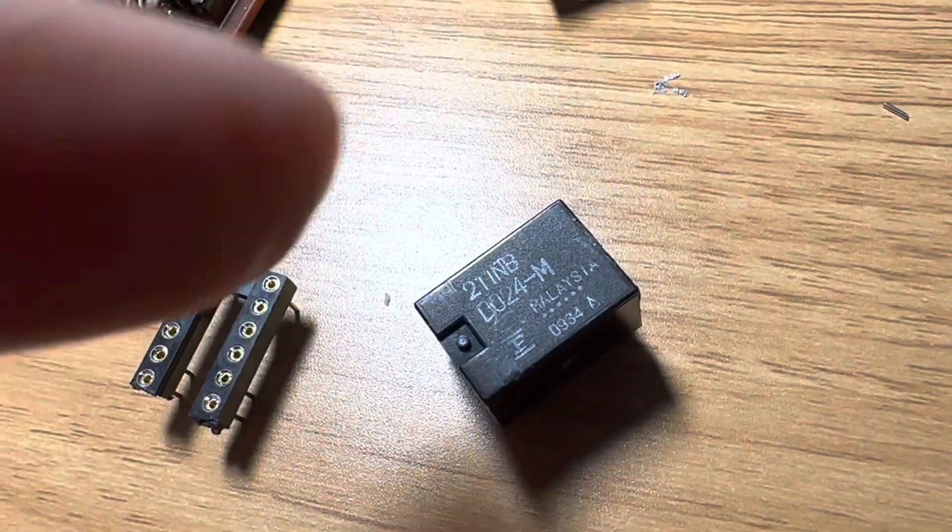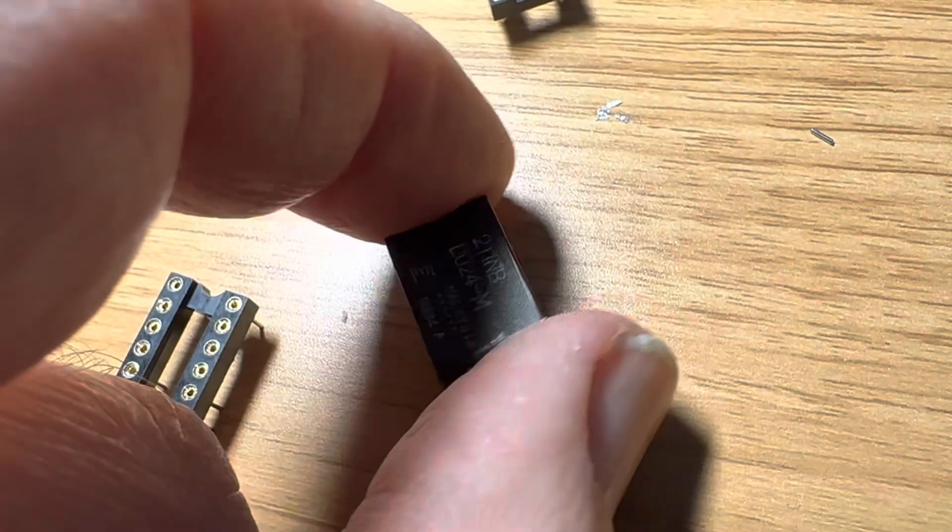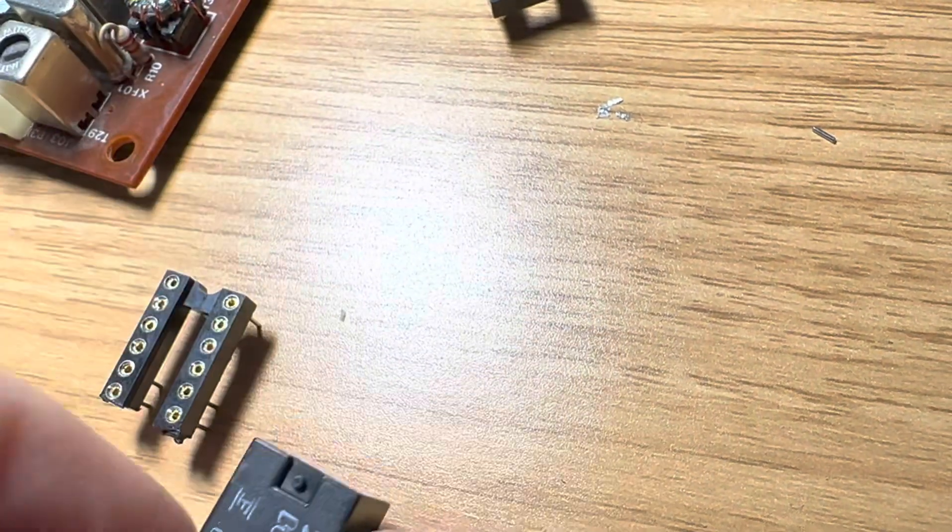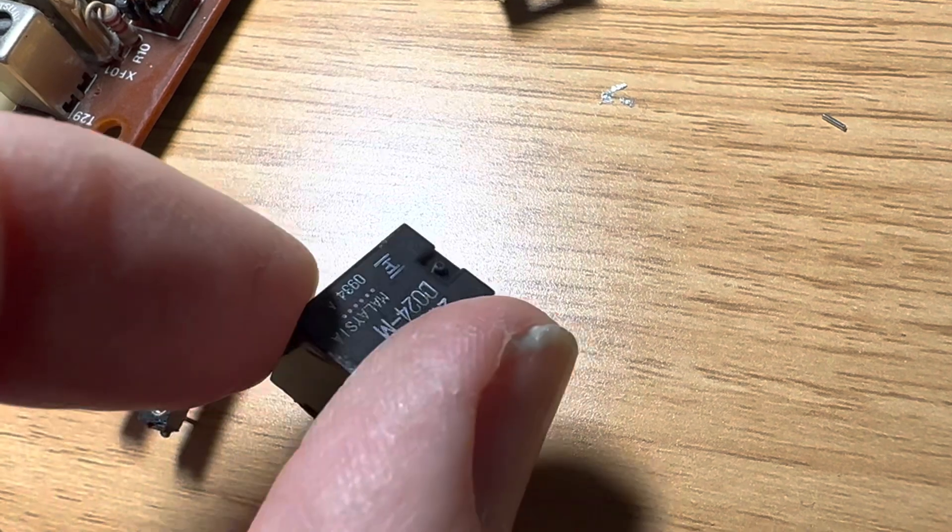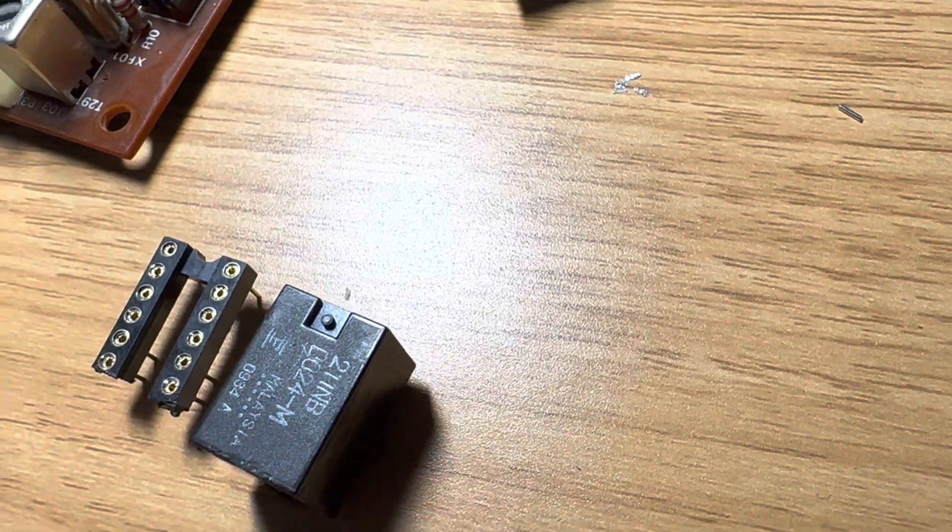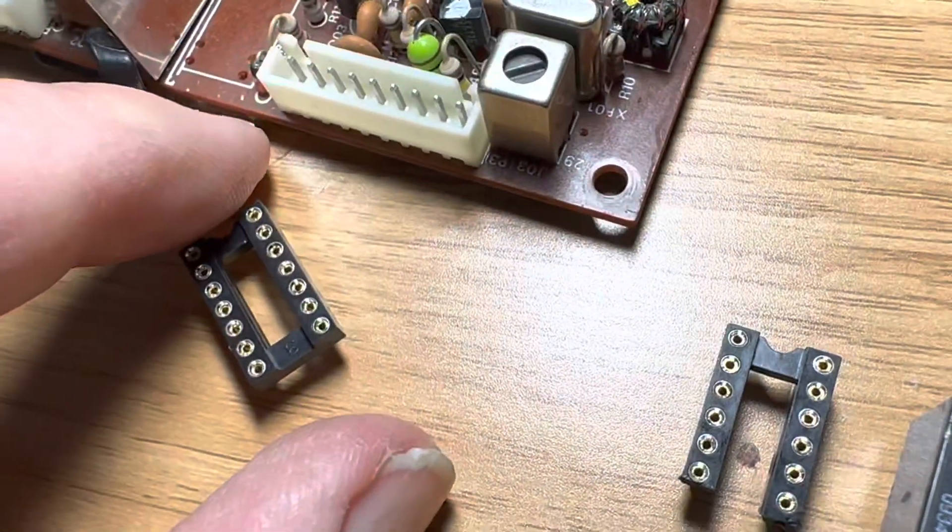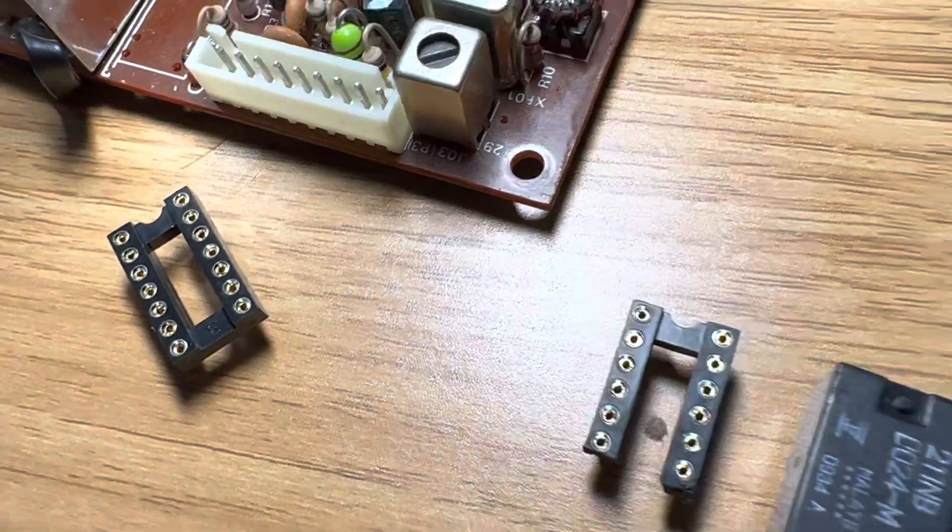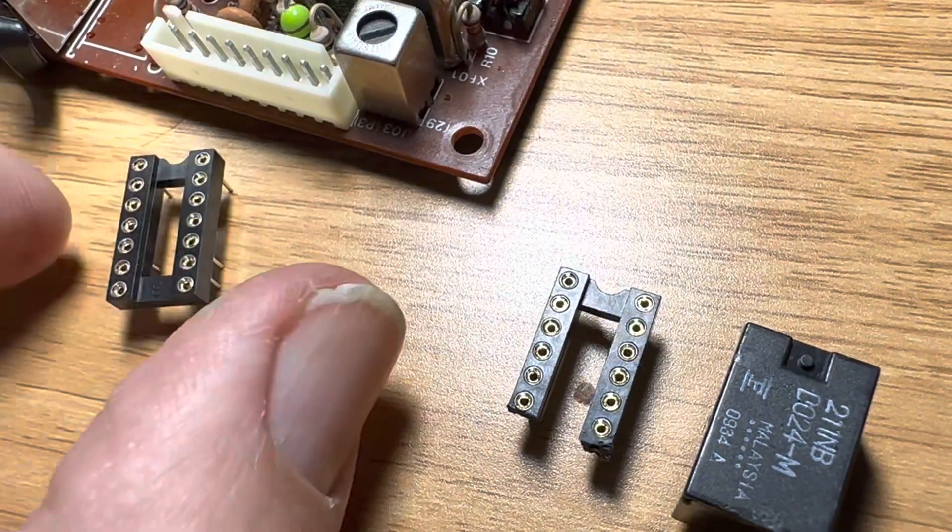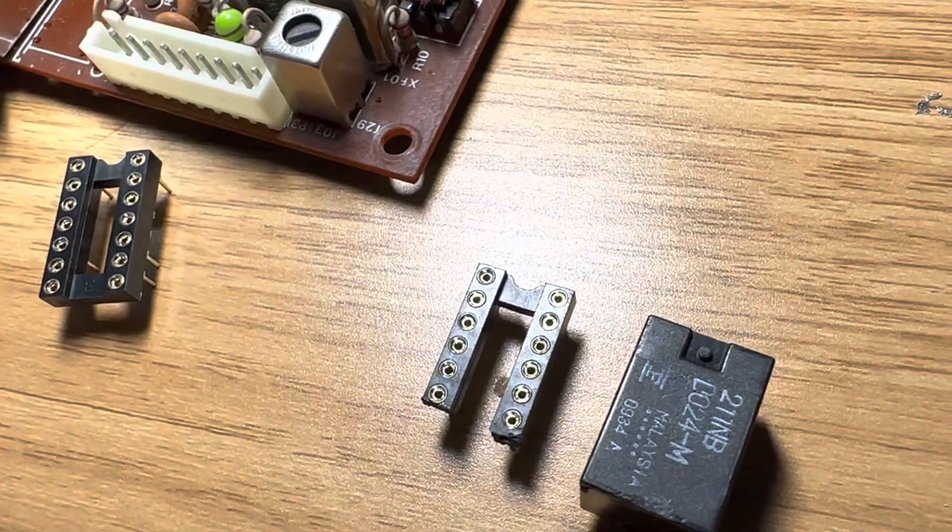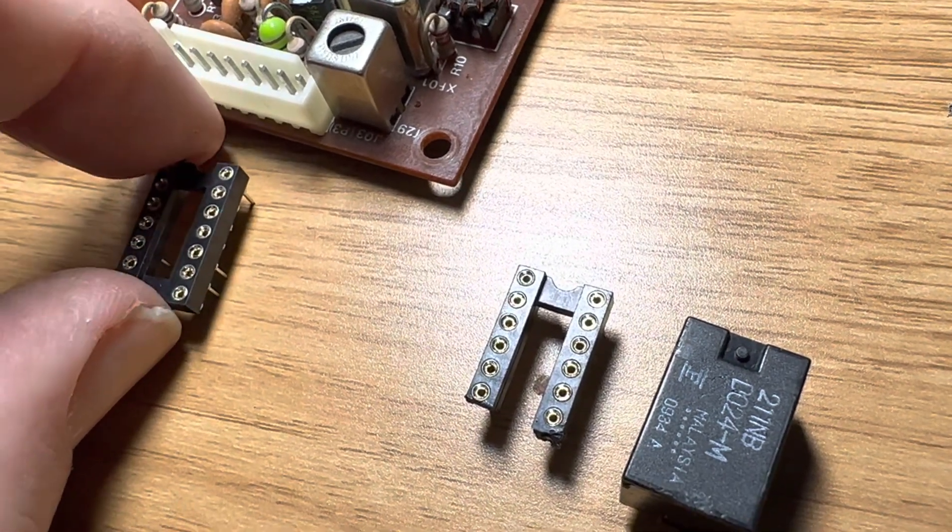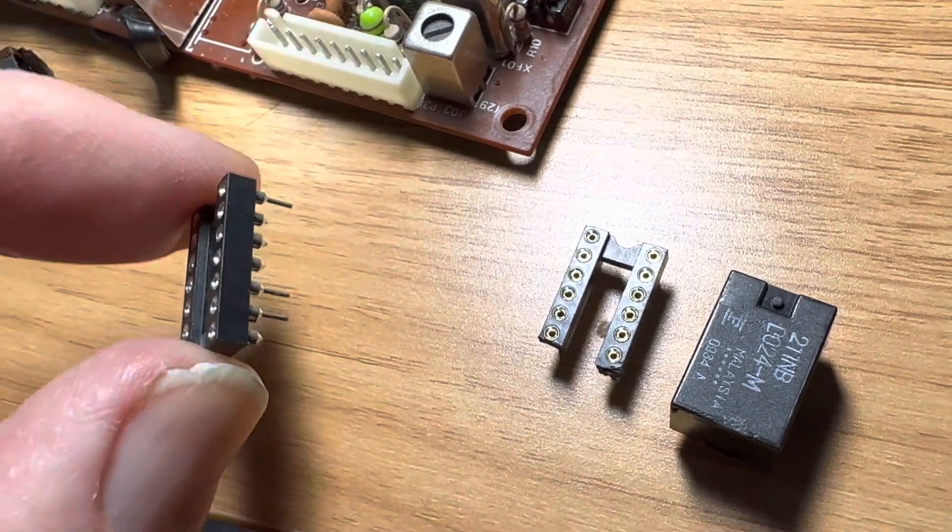So the relay has a notch for directionality, so we're going to make sure that this always goes in like this, and that you always put the relay into the socket with the notch. This socket still has 14 pins. It's going to just kind of scrunch over the end of the board there. I don't need to suffer the integrity of the socket to fit the board on that one.